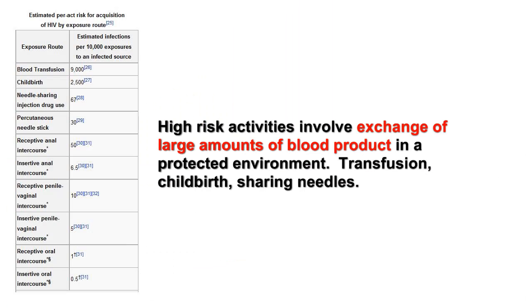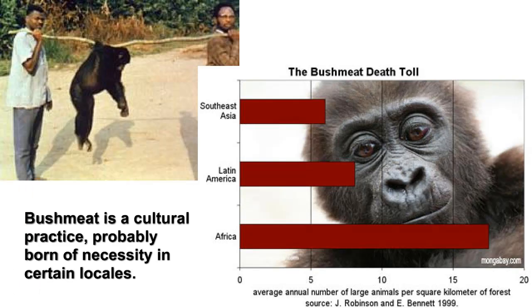We know that SIV and HIV are both spread in the same ways: sex and blood transfers. Blood-to-blood exposures, however, are 900 times more likely to result in infection than sex contact. It's therefore likely that the transmission from primate to human, called a zoonotic event, was the result of hunters trapping, butchering and eating chimps.